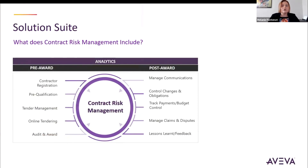Aviva's contract risk management solution covers the full contracting lifecycle, with pre-award on the left and post-award on the right. In pre-award, we start at contractor registration: using a contractor portal, we publish a questionnaire they can fill out, attach security documents, and send back. It can be scored, recorded, and then that bidder is available for bid access.